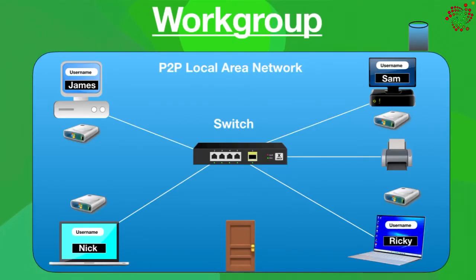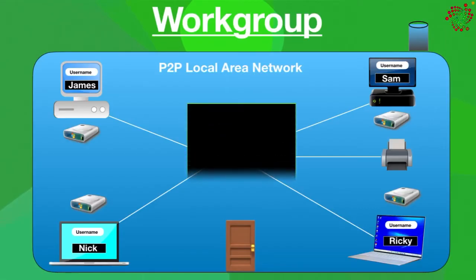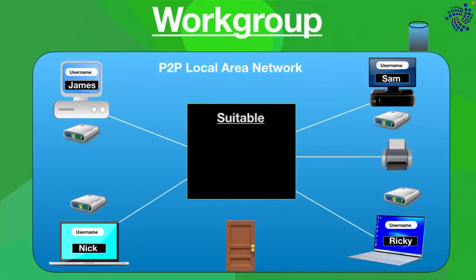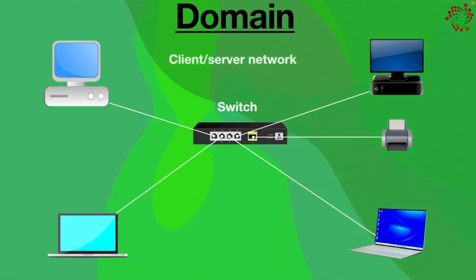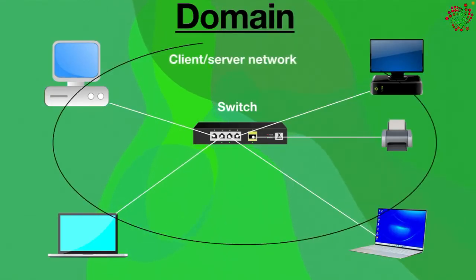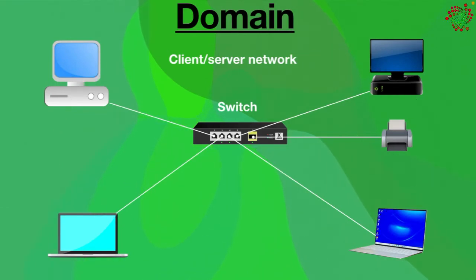That's why workgroup is suitable for small local area networks like schools, colleges, and homes. A domain, on the other hand, is a client-server network. It is basically preferred for large public and business networks.